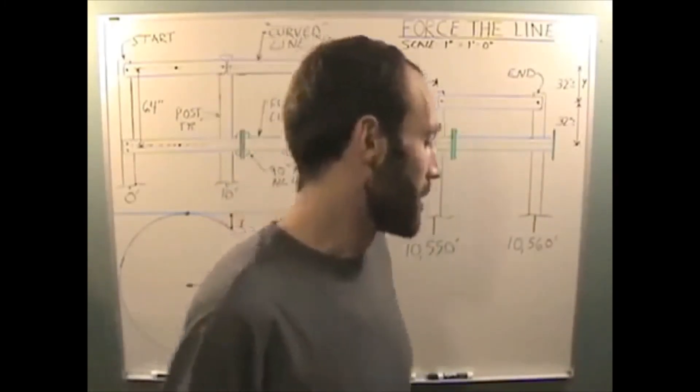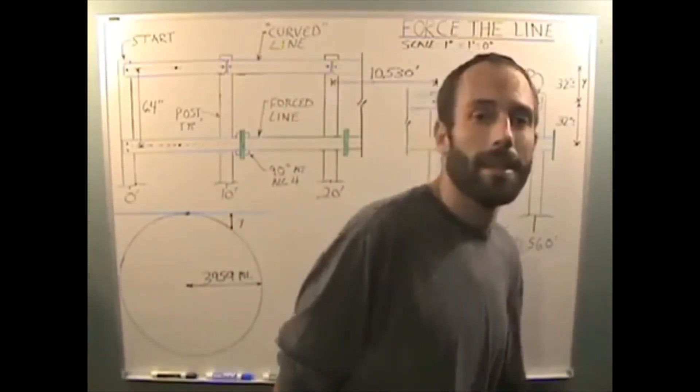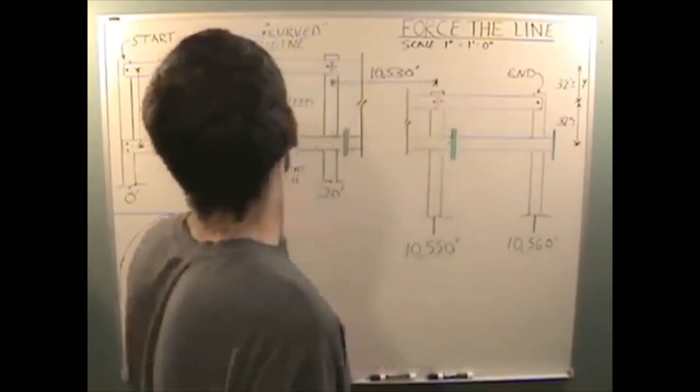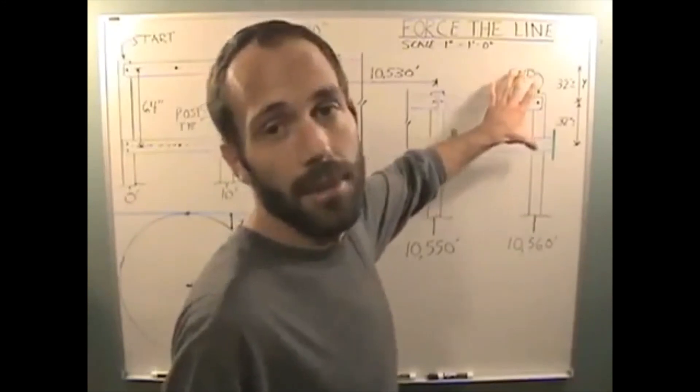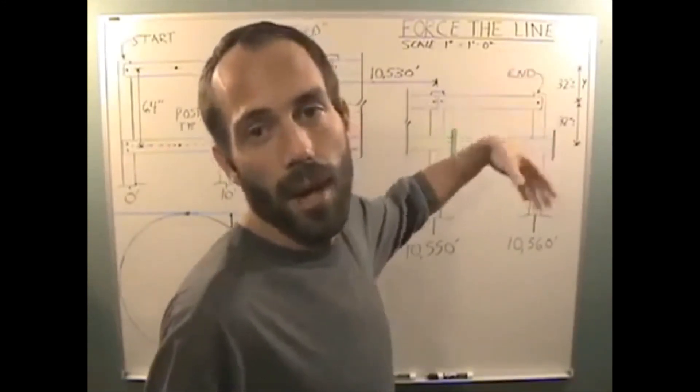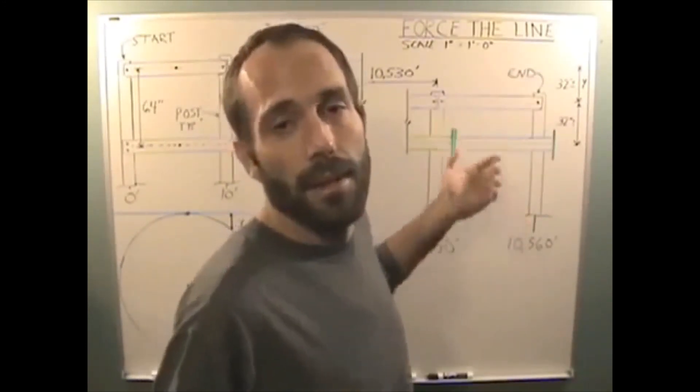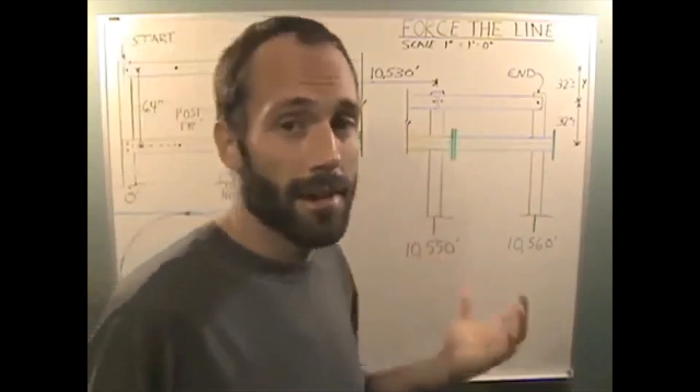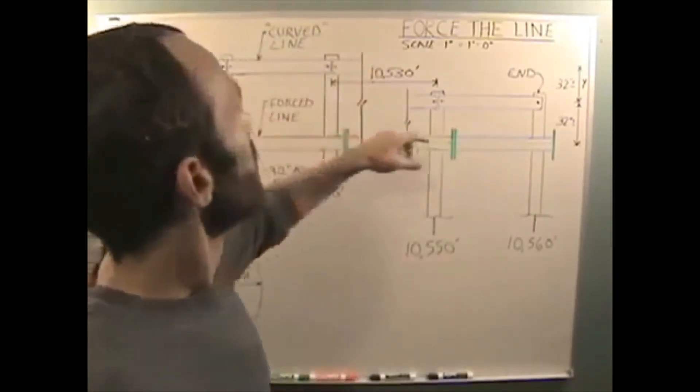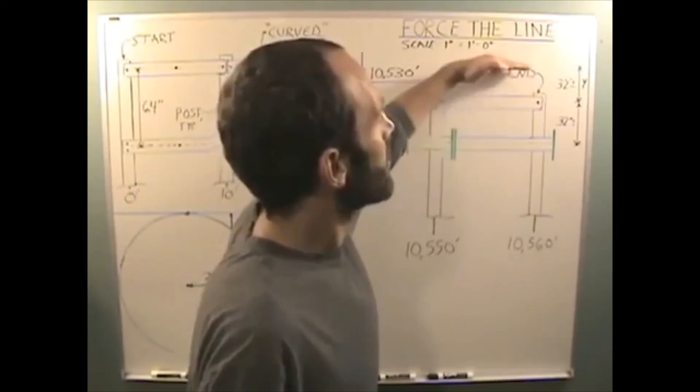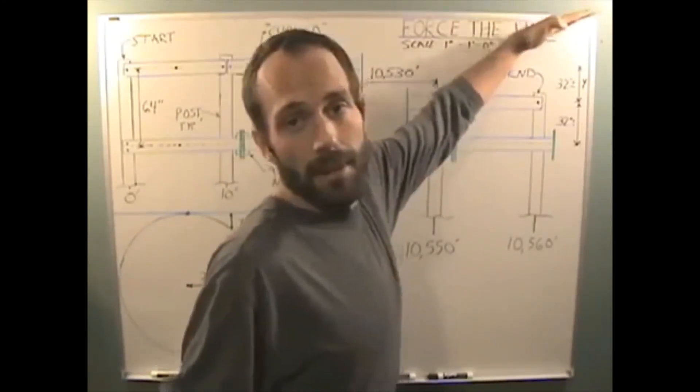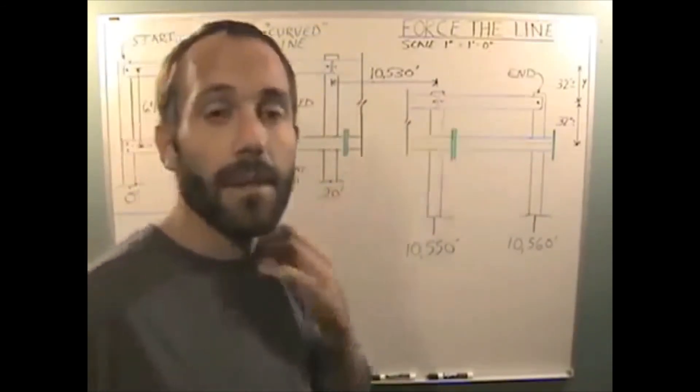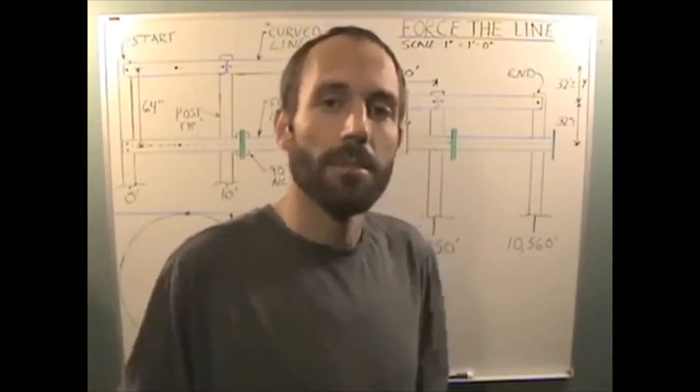Now. If the earth is actually flat. Then, starting at 64 inches here, you would end with 64 inches here. There would be no drop. It would stay the same. If the earth is concave. Then, you would actually end up with 64 inches plus 32 inches. The blue line would be up here somewhere. Because it would show a curve up. Very simple. Let's do it.